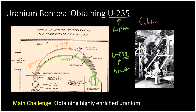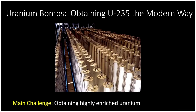A facility in Oak Ridge, Tennessee, ran calutrons for the entirety of the Manhattan Project — the entire time they were working on the nuclear weapon — to produce enough uranium for just one bomb. That's all they had by the end of World War II. The more modern method uses gas centrifuges. Using the same principle — that U-235 is lighter than U-238 — uranium is converted to a gas and spun rapidly. The heavier U-238 moves toward the outside of the cylinders, while lighter U-235 stays toward the center. In the modern era, this is much easier, but the main challenge remains obtaining highly enriched uranium.